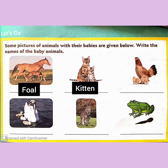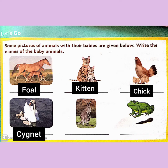Third, hen — the baby is called a chick. Then below, we have swan — the baby is called a cygnet.